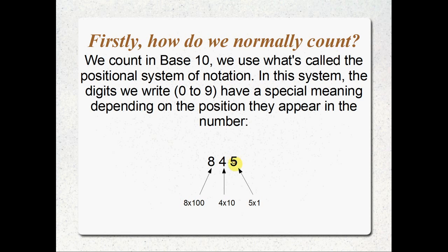In the positional system we've got these ten digits, zero through nine, and each digit has a numerical value — like five means five and four means four. But they've also got a value based on their position in the number. The further left you go, the more value these numbers are multiplied by. So this five is five multiplied by one. This four is in the tens column — that's four multiplied by ten, meaning forty. And this eight is in the hundreds column, meaning eight hundred. So our final number is eight hundred and forty-five.